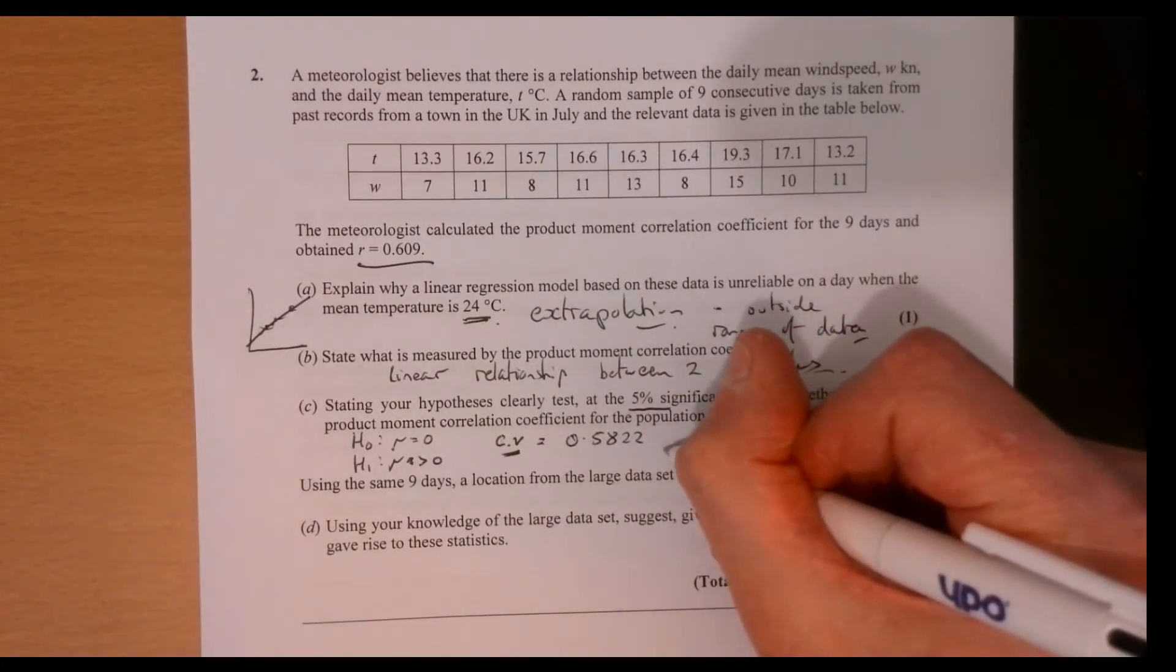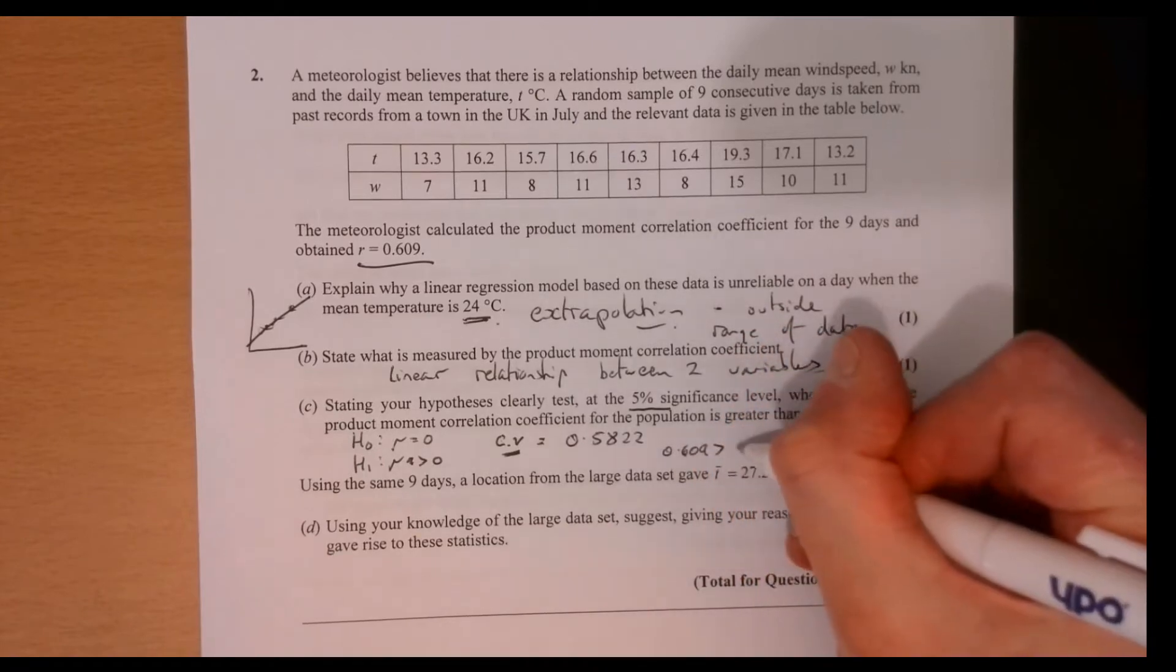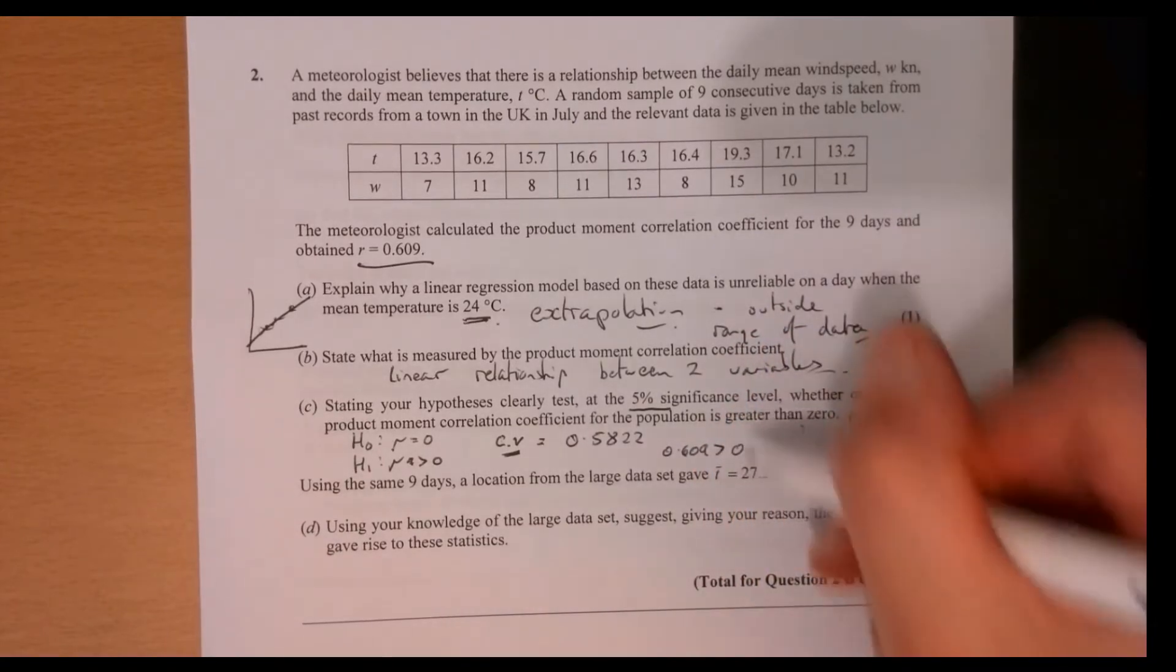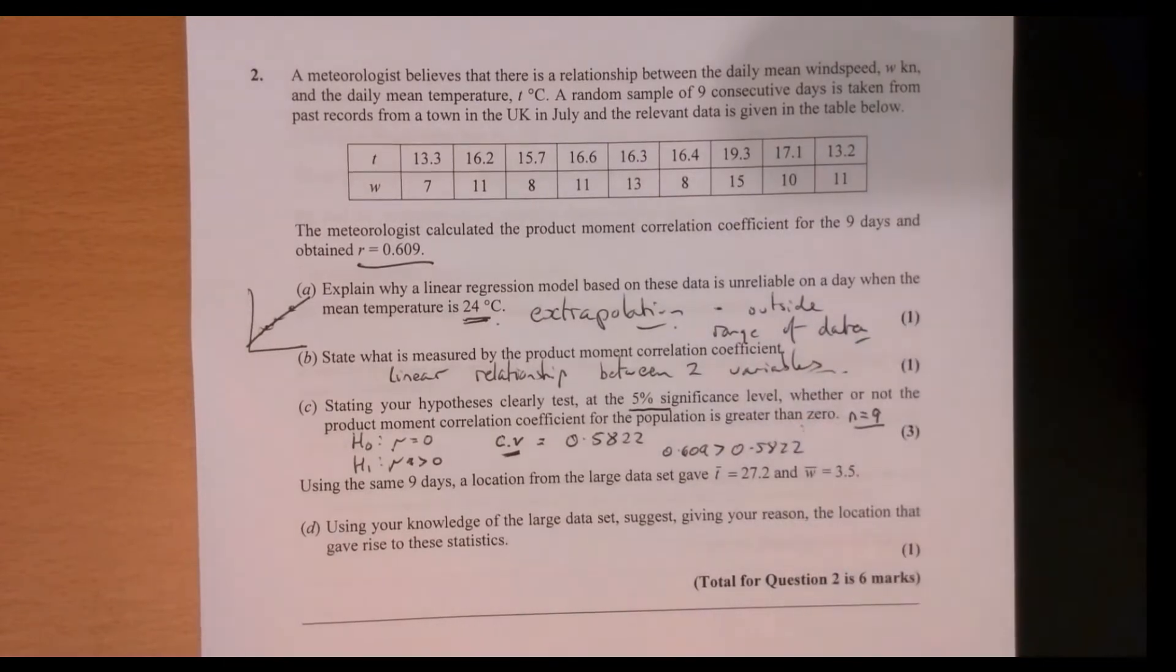We can now say, well, 0.609 is obviously more than our critical value. All right, so make sure that you write it down and get all the marks.